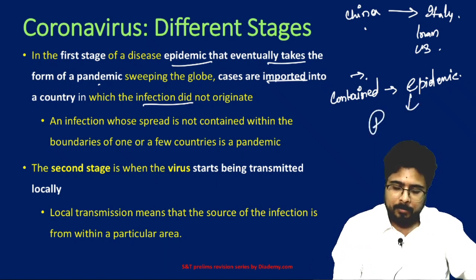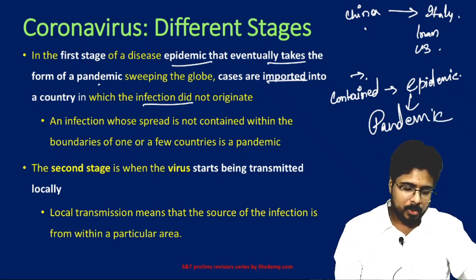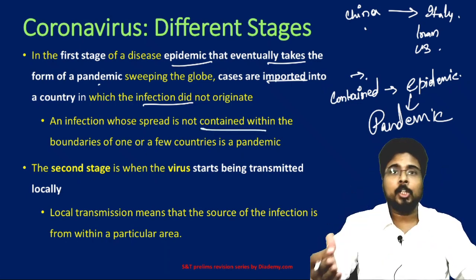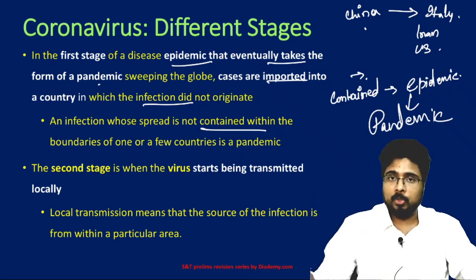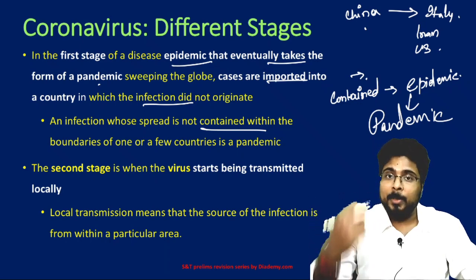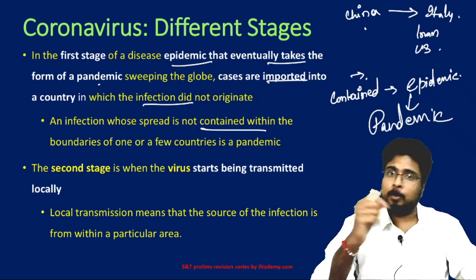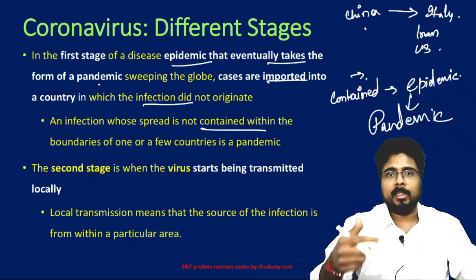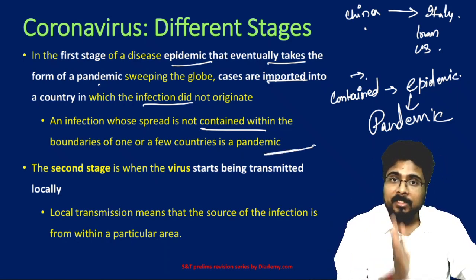An epidemic becomes a pandemic when its spread is not contained within one or a few countries. Coronavirus spread from China to the US, Europe, Australia, India, and various countries across the globe — even to the particularly vulnerable tribes of Andaman and Nicobar Islands. WHO has declared the disease a pandemic. That is the first stage: an endemic disease becoming a pandemic.